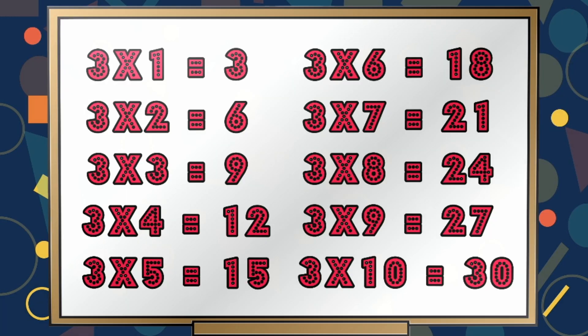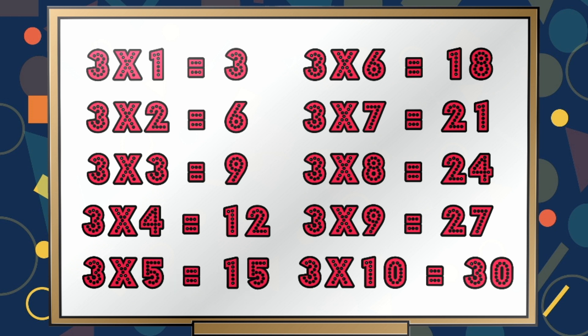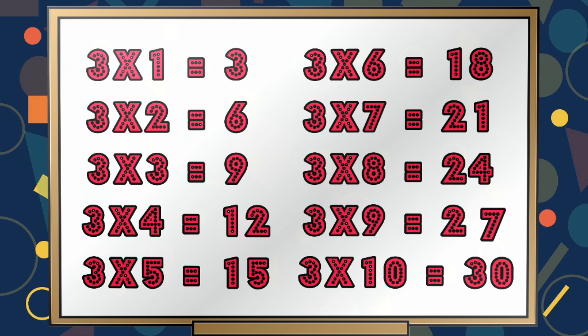3 1s are 3. 3 2s are 6. 3 3s are 9. 3 4s are 12. 3 5s are 15. 3 6s are 18. 3 7s are 21. 3 8s are 24. 3 9s are 27. 3 10s are 30.